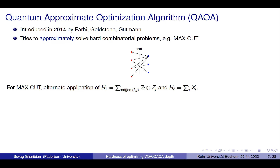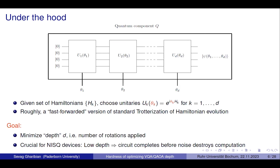A concrete example is QAOA — the quantum approximate optimization algorithm, by Farhi, Goldstone, and Gutmann. You run the circuit, get a quantum state, measure it, and get some string. Then, if you're trying to solve MaxCut, you check whether that string defines a good cut in the graph. Depending on the context, you see what you'll use that string for.